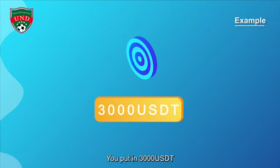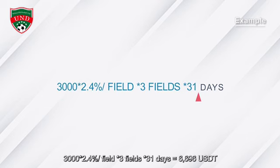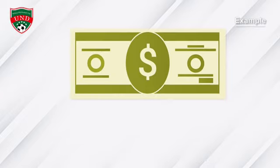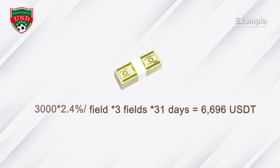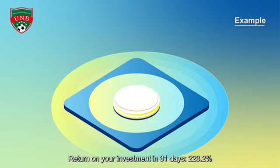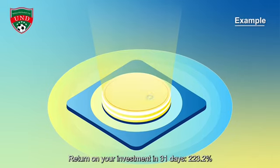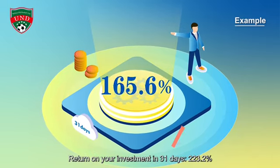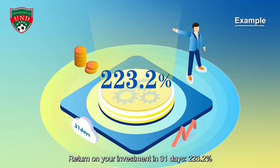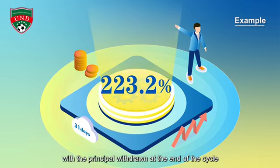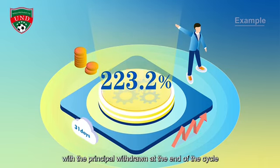You put in 3,000 USDT: 3,000 USDT × 2.4% per transaction × 3 transactions × 31 days = 6,696 USDT. Return on your investment in 31 days is 223.2%, with the principal withdrawn at the end of the cycle.